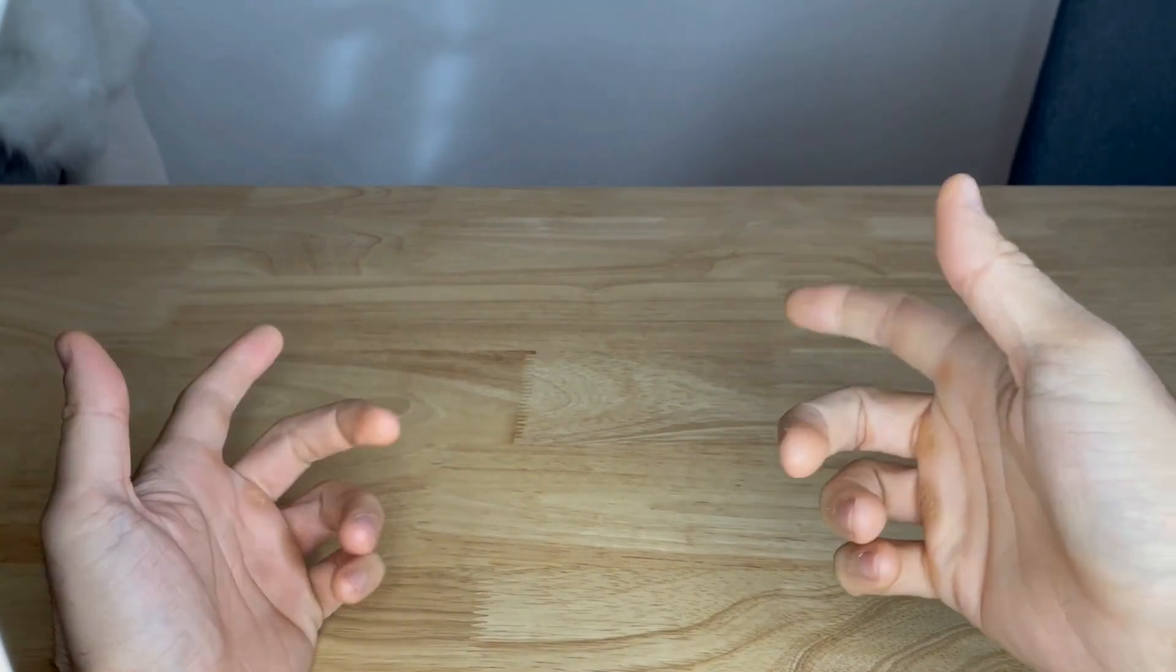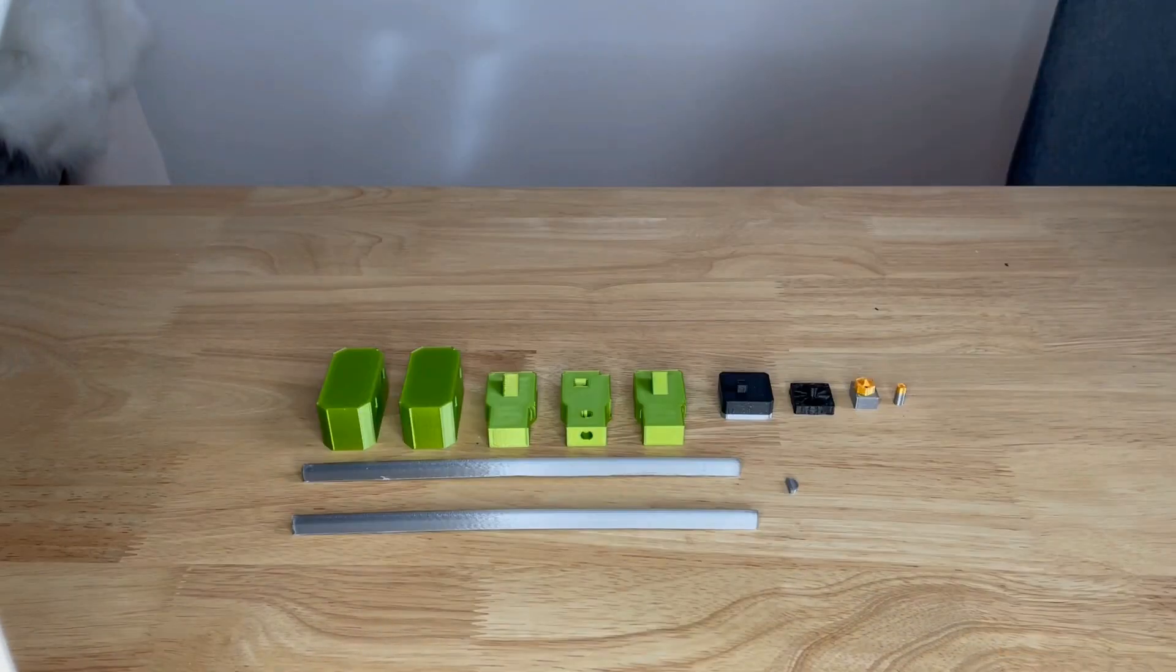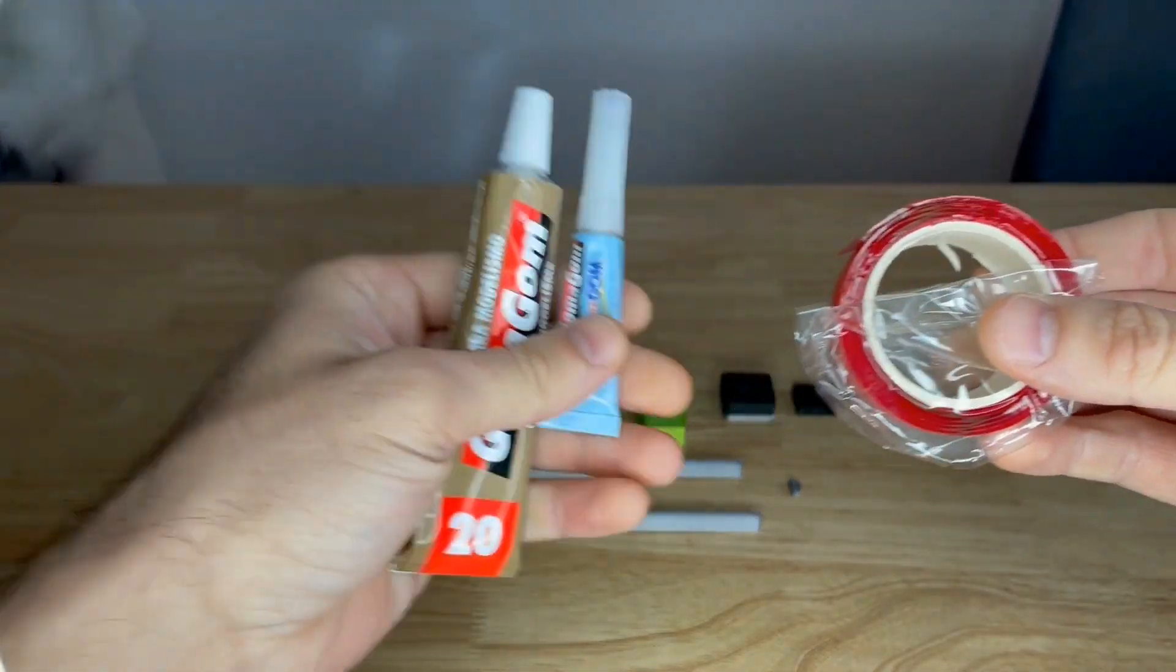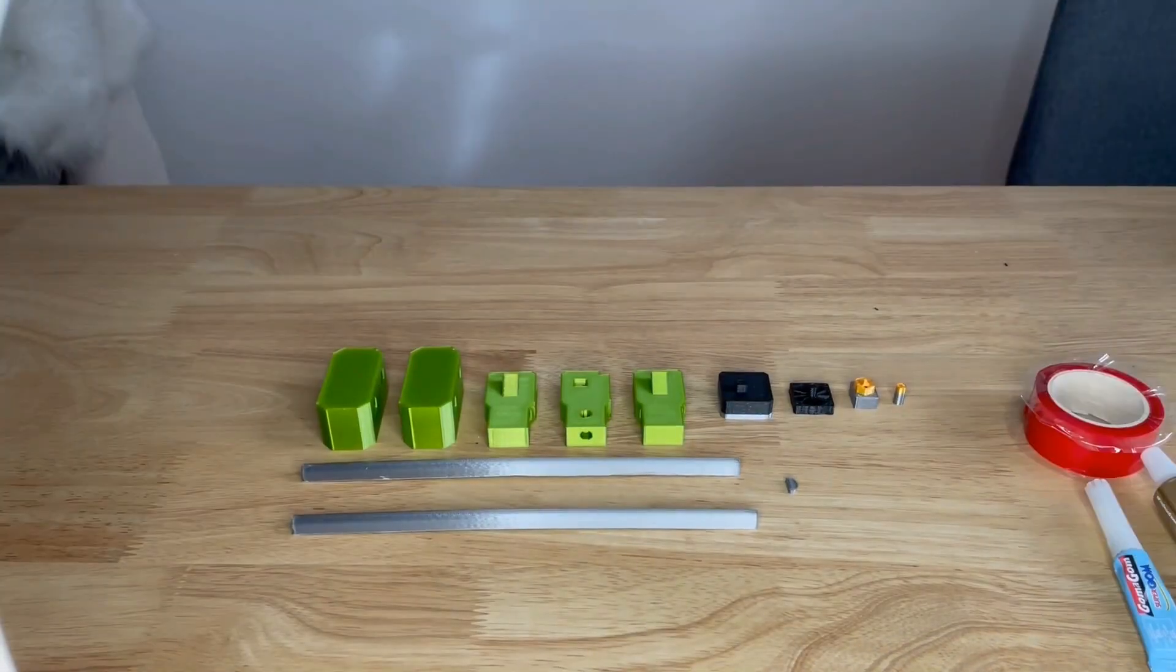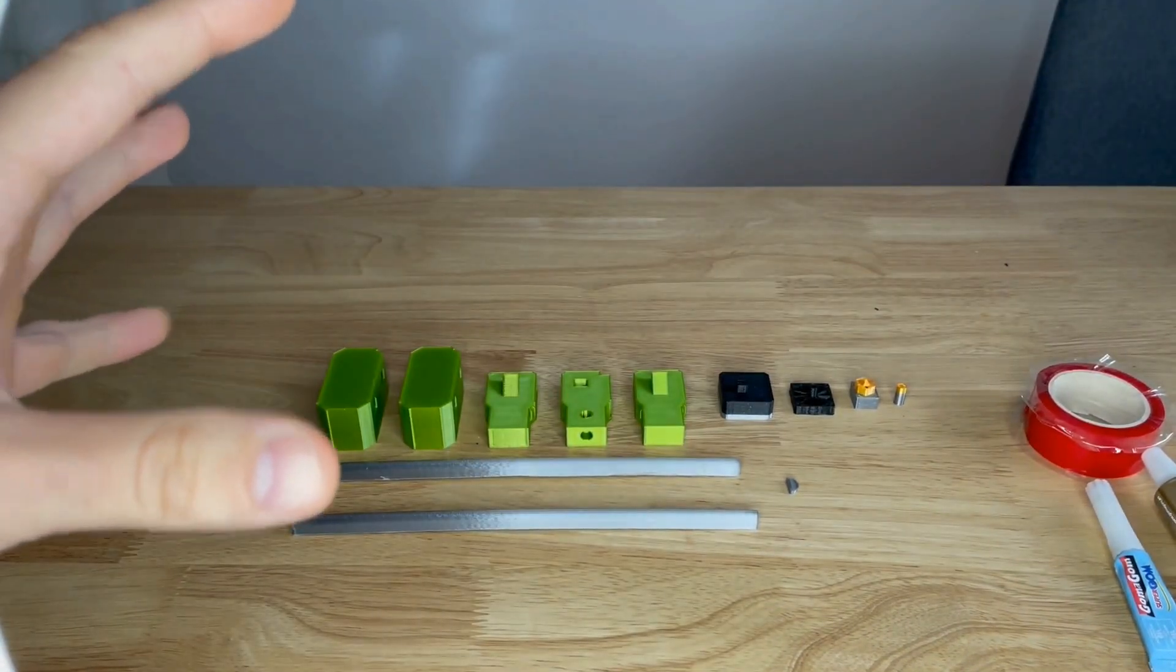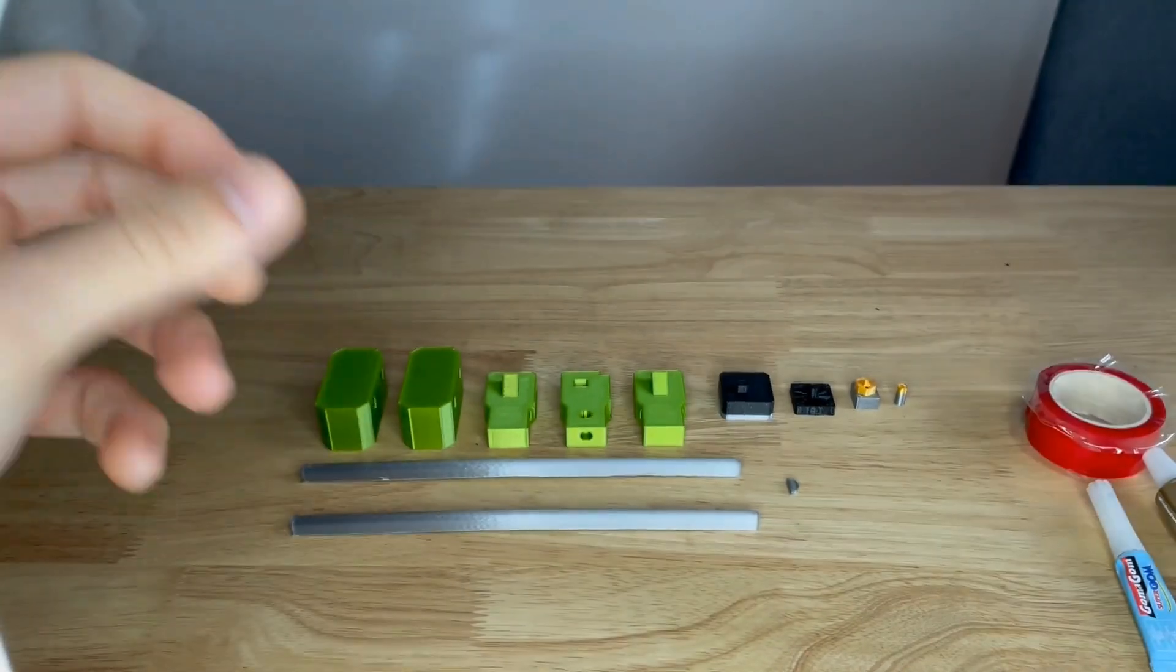For this project we will need the 3D printed parts, double-sided sticky tape, and superglue. The assembly is super simple, so right now I'm going to show you a time-lapse of me assembling it.